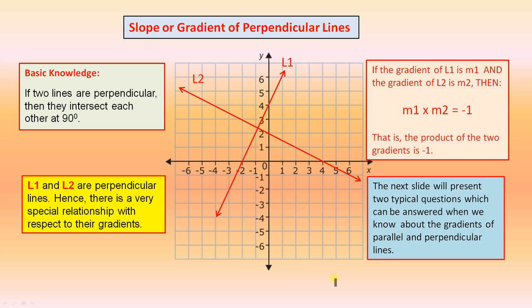Slope or gradient of perpendicular lines. Basic knowledge. If two lines are perpendicular, then they intersect each other at 90 degrees. So here, we're saying that these two lines are perpendicular, so that angle is 90 degrees.